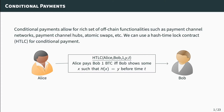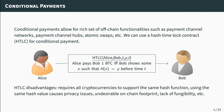Although HTLCs are useful for constructing conditional payments, they have certain disadvantages. For example, they require all cryptocurrencies to support the same hash function, using the same hash value across multiple payments can hinder privacy, they add undesirable on-chain footprint, and they lack fungibility altogether.